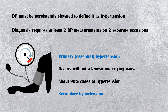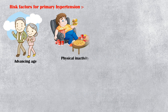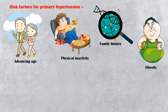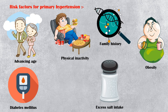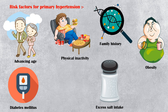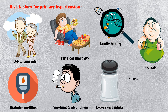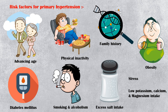Risk factors for primary hypertension include the following: advancing age, physical inactivity, family history of hypertension, obesity, diabetes mellitus, excess salt intake, smoking and alcoholism, stress, and low potassium, magnesium, and calcium intake.